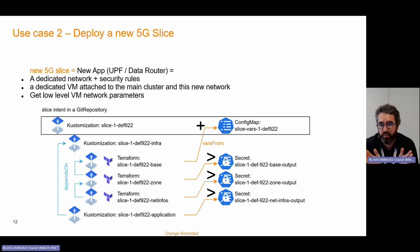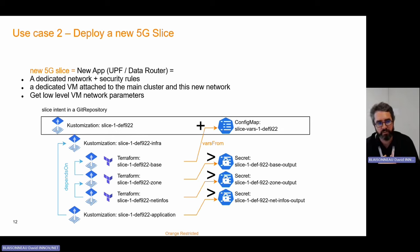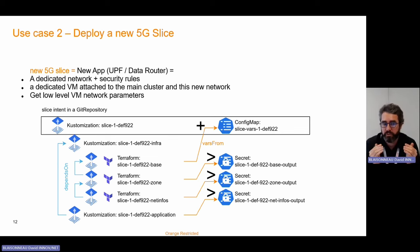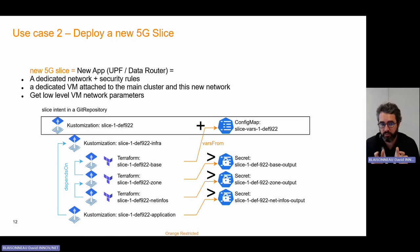The other use case is the deployment of a new slice. As I said, a new slice is a separated place in our network — we create a slice of a network for a specific need, for a security reason, or for a specific quality configuration. In our deployment, it's mainly the creation of a new data router, a new UPF. This UPF must rely on specific configuration. We must create a new network and security rules to have a specific path for the data. We have to create a specific VM attached to the main cluster on the new network — a new tainted node in the main cluster that will host only this UPF, for security and data security reasons.